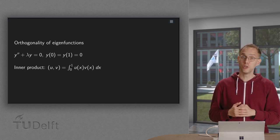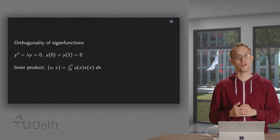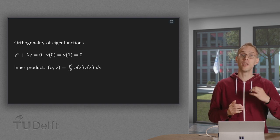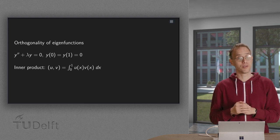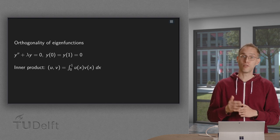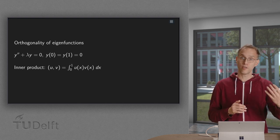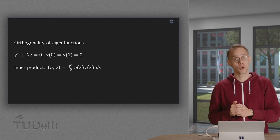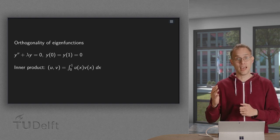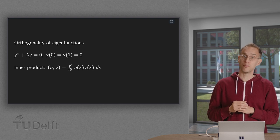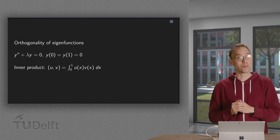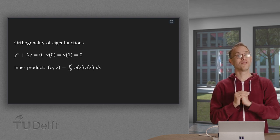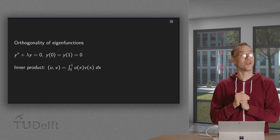In some cases we can deduce a number of useful properties of eigenvalue problems before solving them explicitly. We can for example see that the eigenvalues are positive, which is useful because then we know we only need to look for positive eigenvalues. Or we can show that the eigenfunctions are orthogonal, which is also nice because then we do not have to show this after computing them explicitly. That is what you will learn in this video.